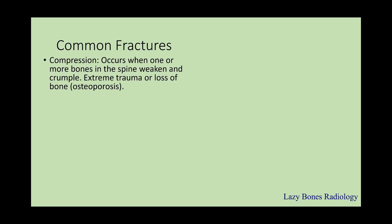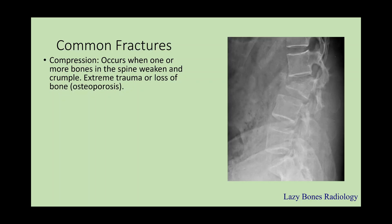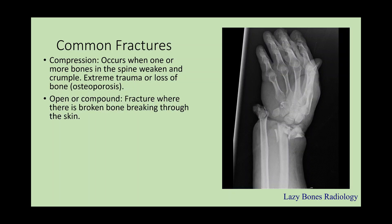Now that we've covered the classifications, we'll talk about the common fractures — try not to confuse the classifications with these. Compression fractures occur when one or more bones in the spine weaken and crumble as a result of trauma or bone loss, such as osteoporosis. As you can see here, a triangular-shaped vertebral body among square-shaped ones indicates a loss of height and a compression fracture. An open or compound fracture is one where a broken bone breaks through the skin.